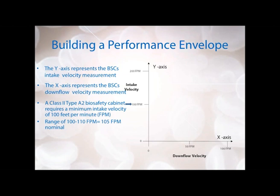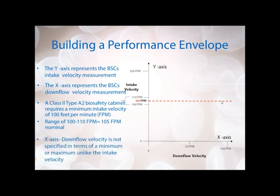That way, if there's any fluctuation in the instrumentation measurement of your inflow intake, it will not ever be below 100 feet per minute. So the acceptable range would be 100 to 110 feet per minute, with 105 feet per minute as your nominal set point. The downflow velocity is not specified in terms of a minimum or maximum like the intake air — this is dependent on whatever the company decides works best for their cabinet. They should let you know what the downflow velocity set point is; for example, we have it set at 50 feet per minute.